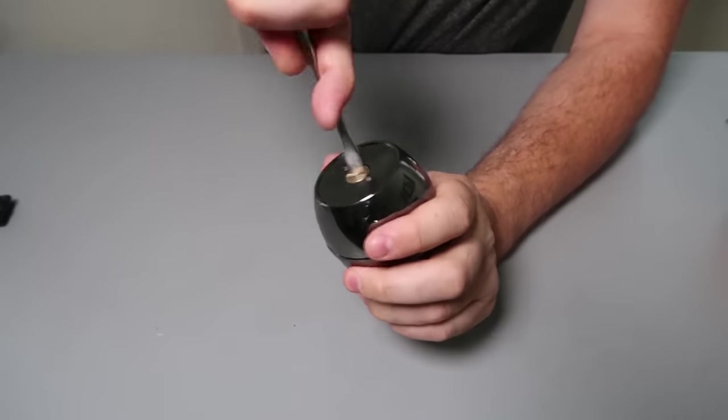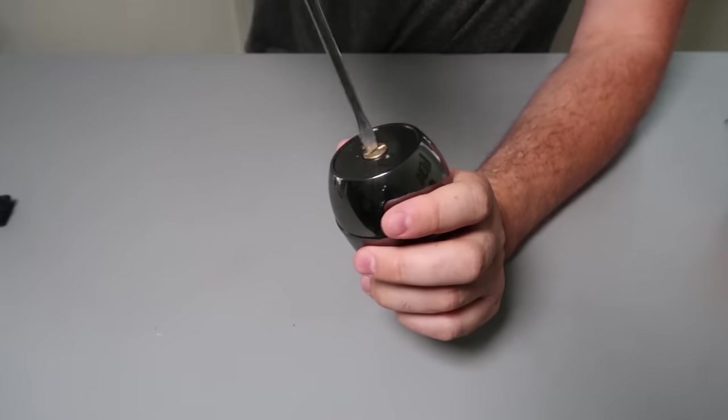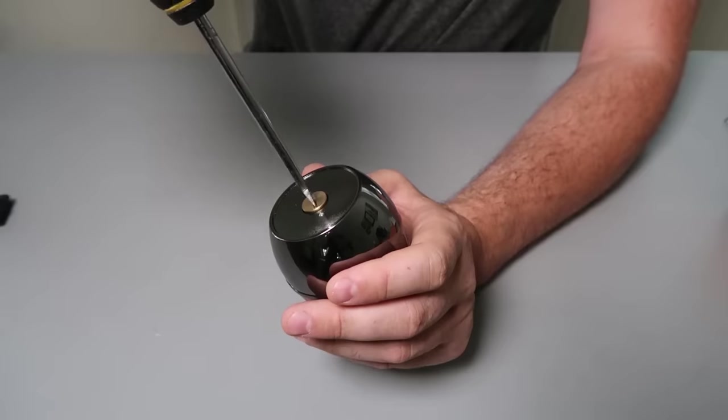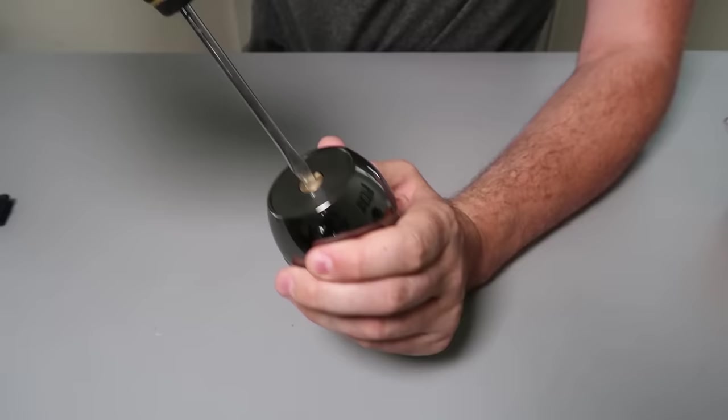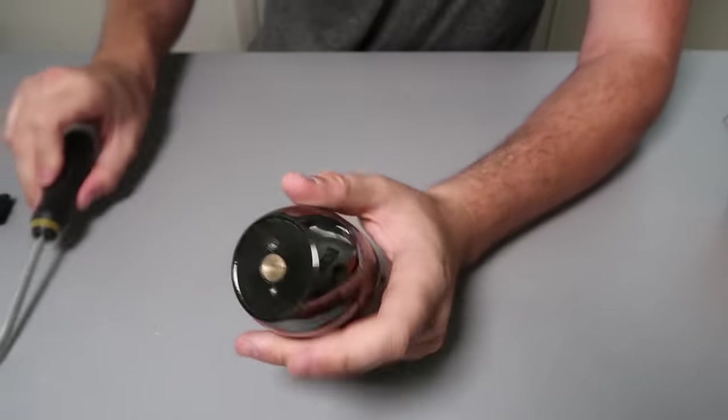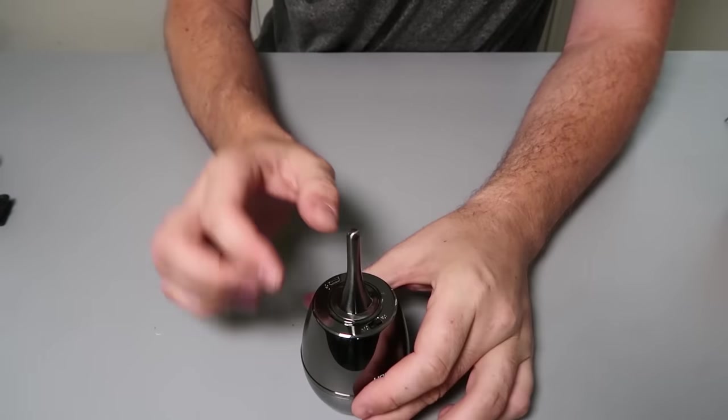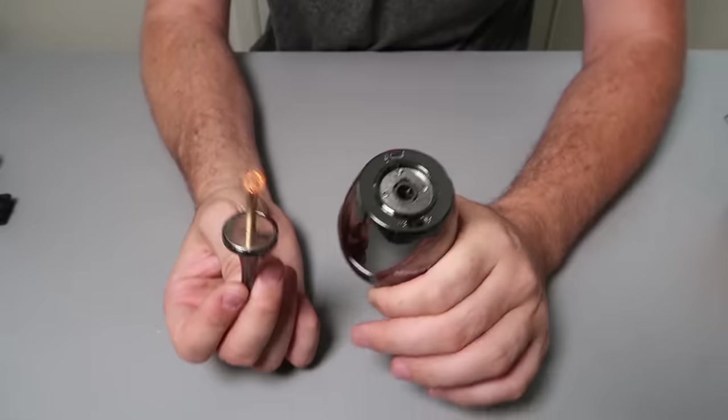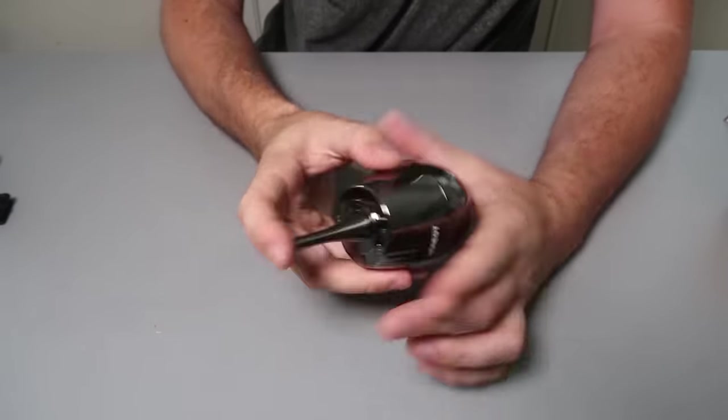It will take lighter fluid. Usually Forever Matches have a striker that you have to replace at some point or it will run out. This one just has an electronic arc lighter. So press it on and boom, it will automatically shut off.